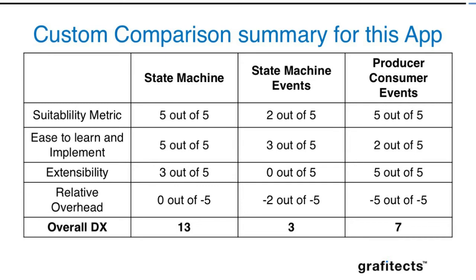For state machine events: functionality suitability scores two out of five because the UI was unresponsive while the process ran. Ease of learning is okay but you need to understand events more. Relative overhead is minus two compared to the state machine since we need extra work for a polling-code requirement using events. For the producer-consumer loop: functionality suitability is five out of five, ease of learning is slightly harder, extensibility is maximum since it's a multi-loop application, but relative overhead is also the highest. Final scores: 30, 3, and 7 — state machine is the clear winner for this case.